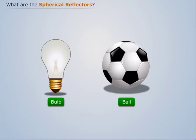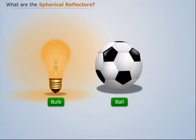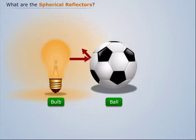Let us consider an example of a bulb and a ball. When a bulb glows, the light is scattered in all directions. If you place a ball near the bulb, it will reflect back the light coming out of the bulb.